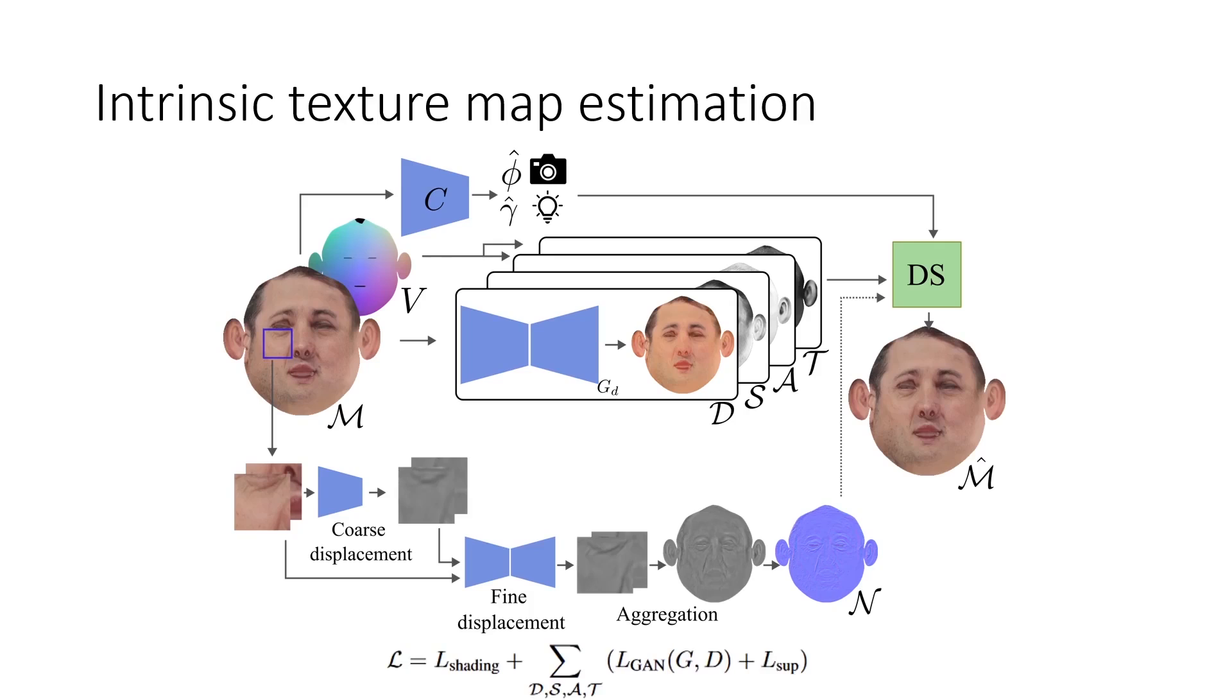We use the following loss function. L-shading is the L1 norm between the input M and the rendered image M-hat. L-GAN is an adversarial loss added for each map separately. We also supervise this model when trained with light-stage data. This enables the separation of maps that would otherwise be entangled.